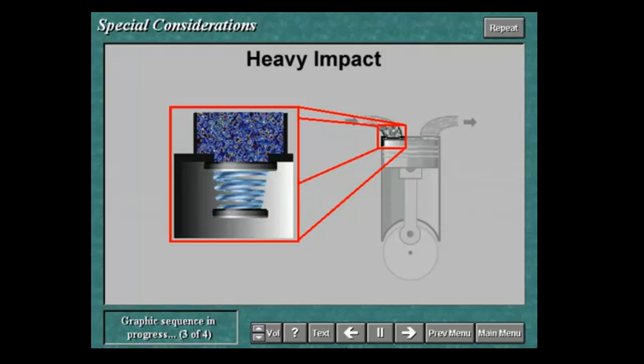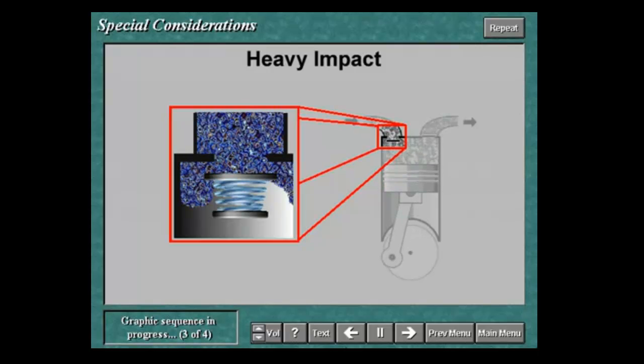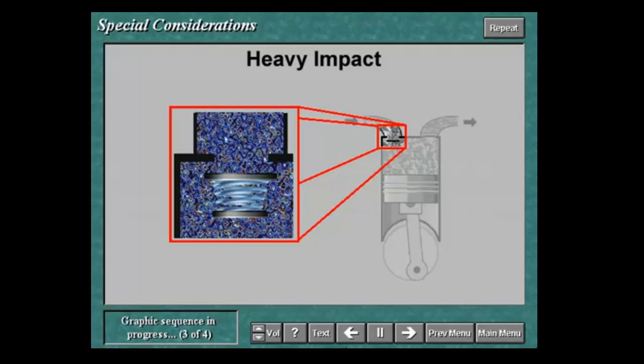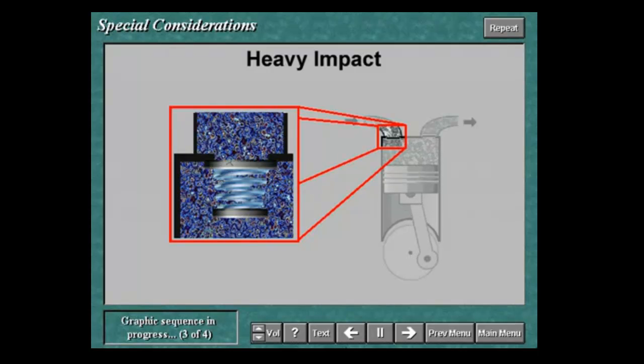If the valve remains open after the dead end of the stroke, closure will happen under both spring force and gas force due to backflow of the gas. The combined effect will result in a heavy impact and likely ring damage.